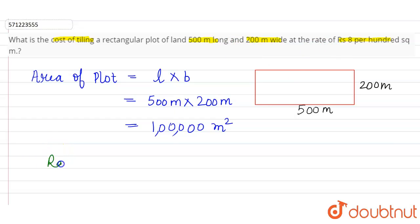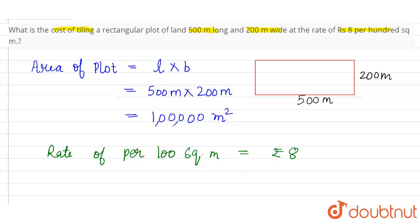Rate is given: per 100 square meters is rupees 8. So we can say, in 8 rupees, 100 square meters can be tiled.